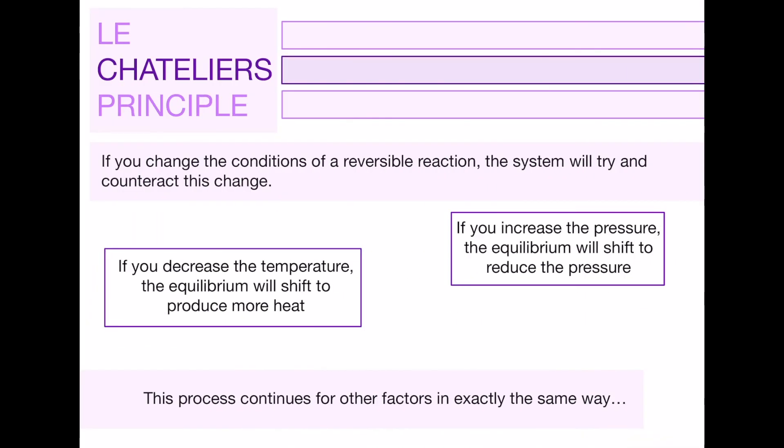And finally we have Le Chatelier's principle. If you change the conditions of a reversible reaction, the system will try and counteract this change, that is effectively what the principle is. So two examples here, if you increase the pressure on one side the equilibrium will shift to the other side to reduce the pressure. You don't really need to worry too much about what the equilibrium shifting means but having the terminology there is good. And another one, if you decrease the temperature the equilibrium will shift to produce more heat. So it just kind of naturally balances it out as you would expect. And this process continues for other factors in exactly the same way.